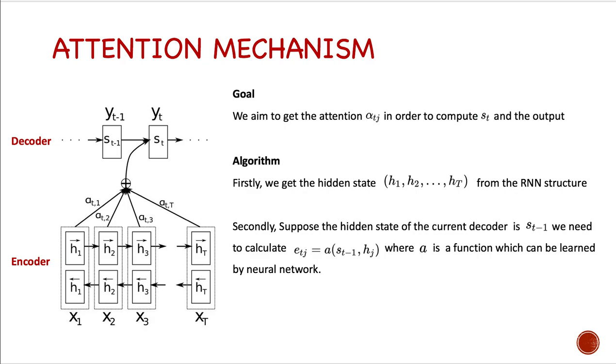So our goal is to get the attention weight alpha_{tj} in order to compute s_t, which is the hidden state in the output layer, and also get the output y_t. So the algorithm goes like that.